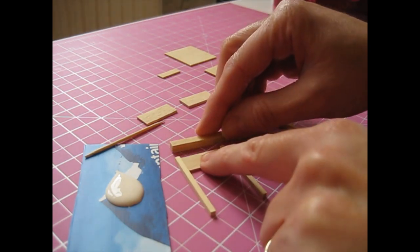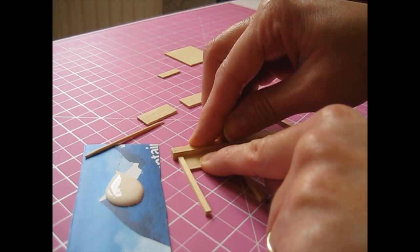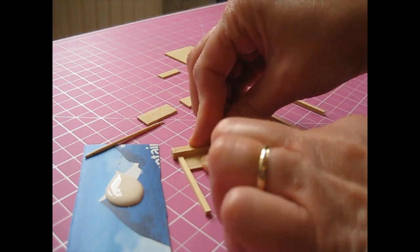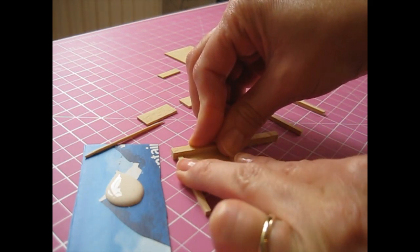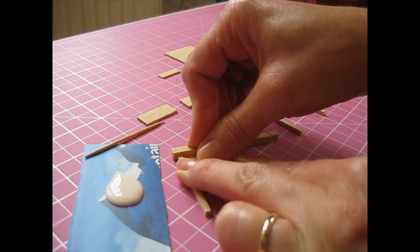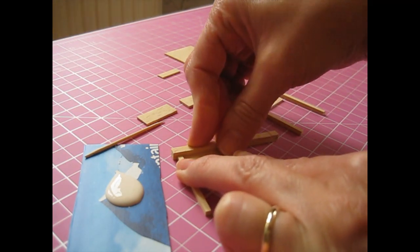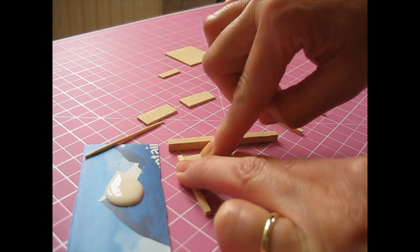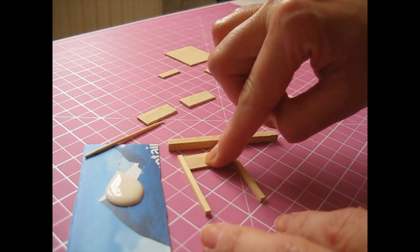You can use a spare piece of strip wood just to make sure that all the pieces are flush towards the top edge. Push them all up against that spare piece of strip. Make sure the side is sitting flat against your work surface as well.